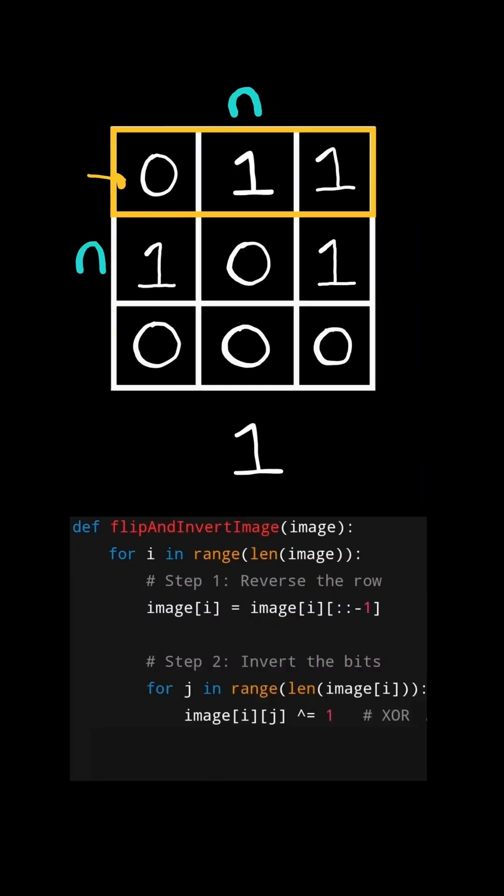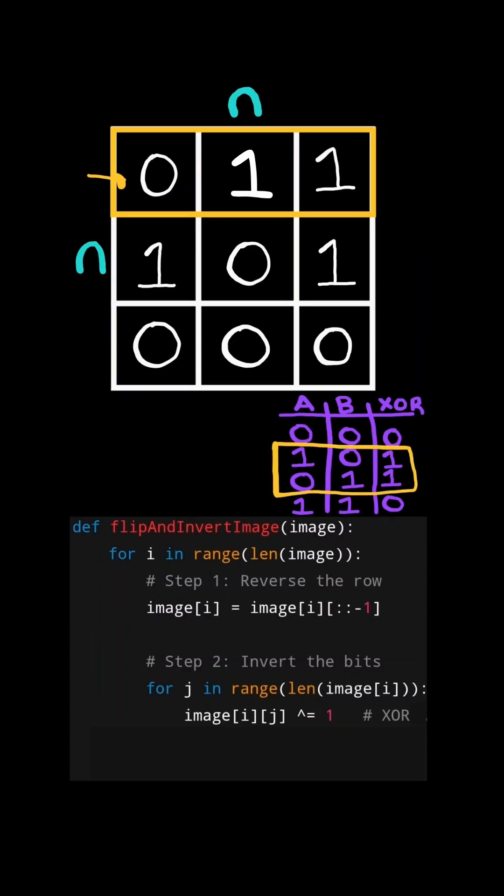And now the next step is to invert the row. Consider the XOR truth table. If the values differ, then the result of the XOR is 1. But if the values are the same, then the result of the XOR is 0.